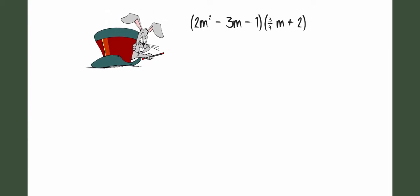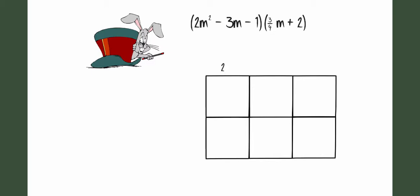Next, we're going to look at a situation involving fractions. I'm going to set up the multiplication array by placing the 2m squared minus 3m minus 1 on top of the array. And then I'll be multiplying that by 3 fourths m plus 2, which I'm going to put on the side.